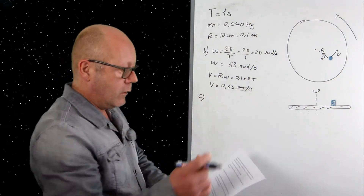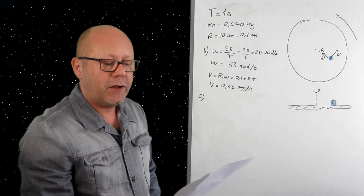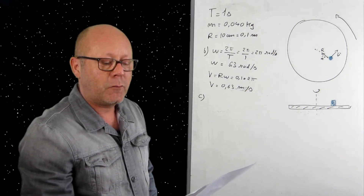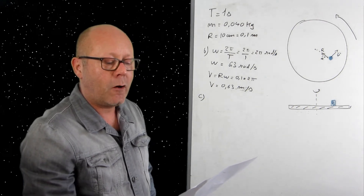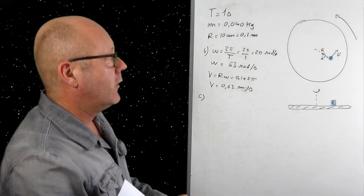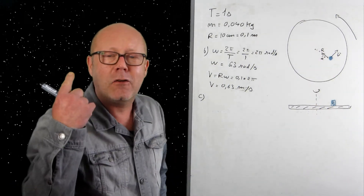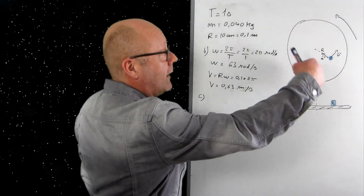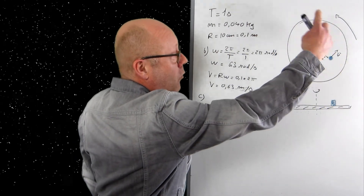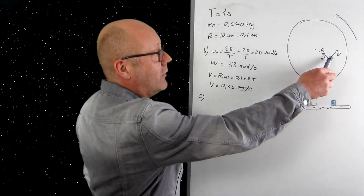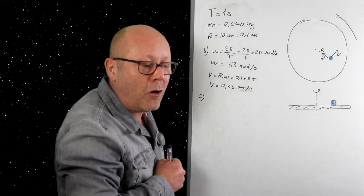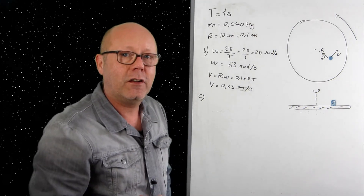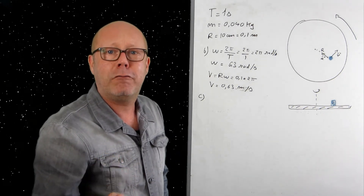Question C: the coefficient of static friction between the object and the disk is 0.78. What is the largest distance from the center where the particle can be placed without being ejected? As the disk turns faster and faster, at a certain angular velocity the object will be ejected from the disk. That is due to friction between the object and the disk.